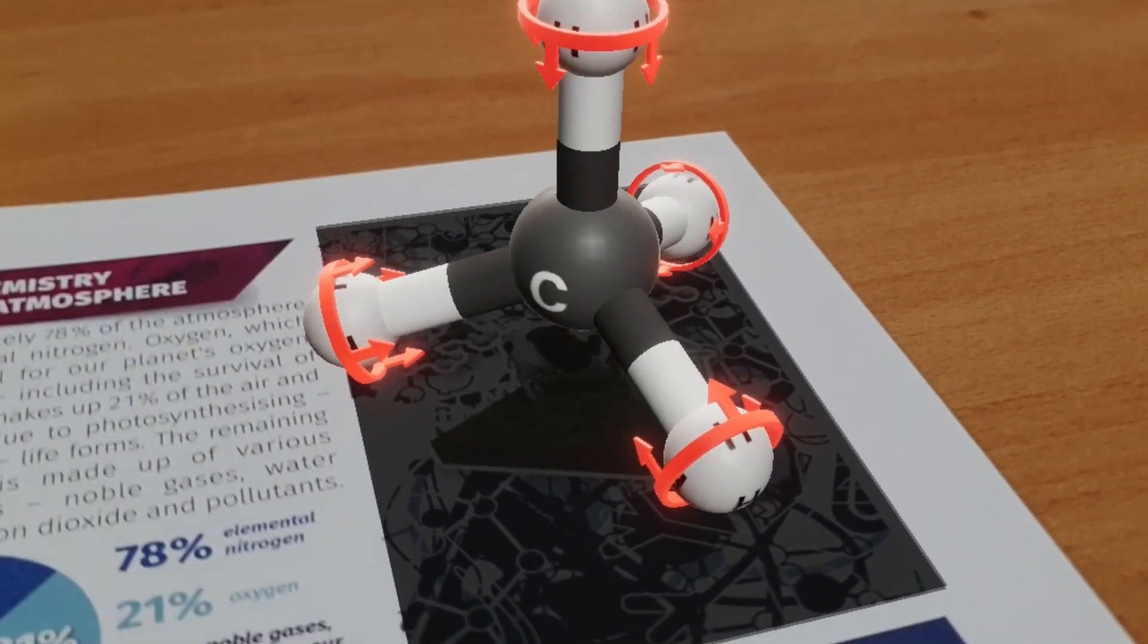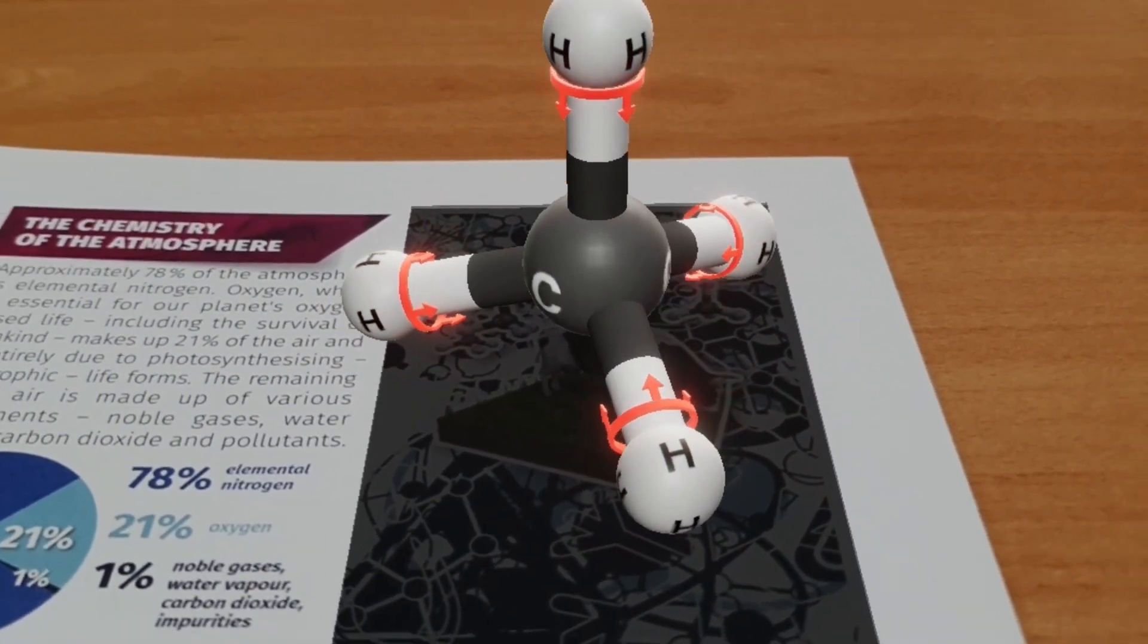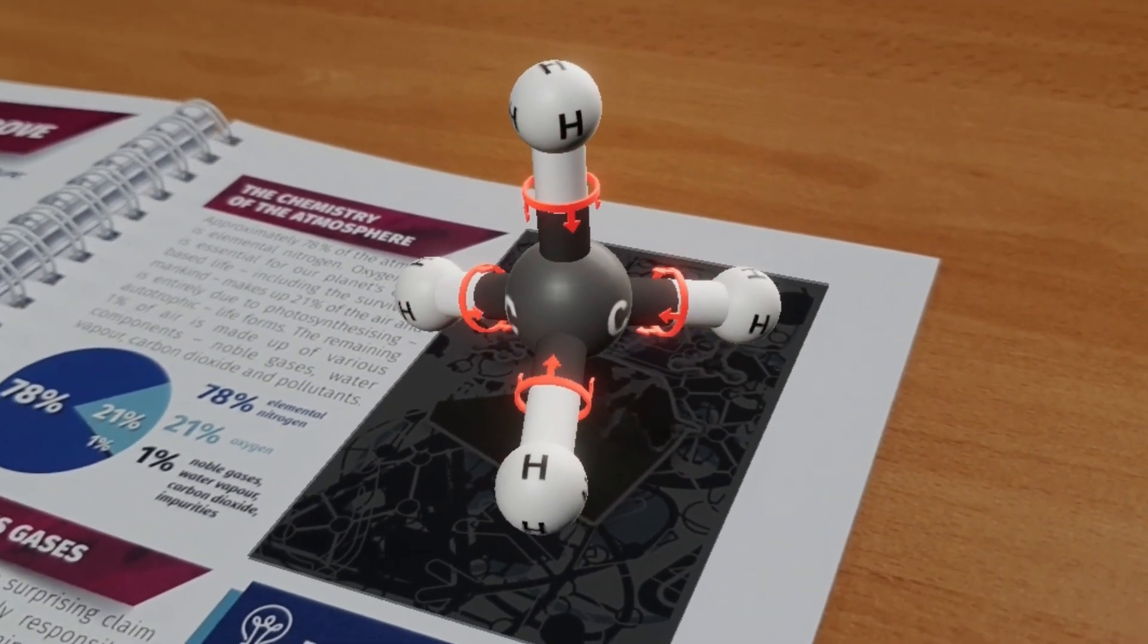In a methane molecule, the four hydrogen atoms are linked to a central carbon atom.